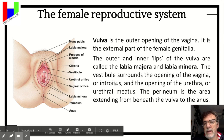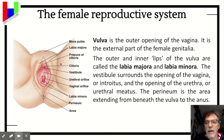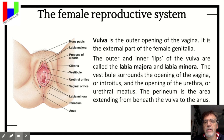You can see a schema here. It is formed by the mons pubis in the upper part, and here you have the perineum and the anus. The external part is the labia majora — los labios mayores.